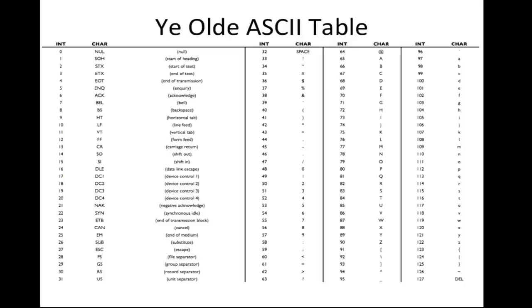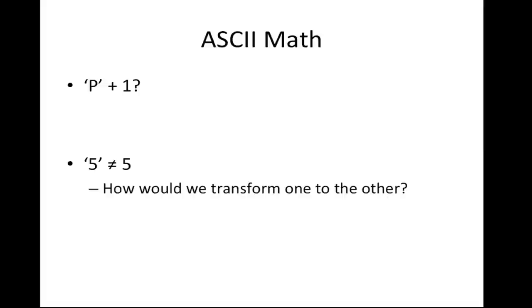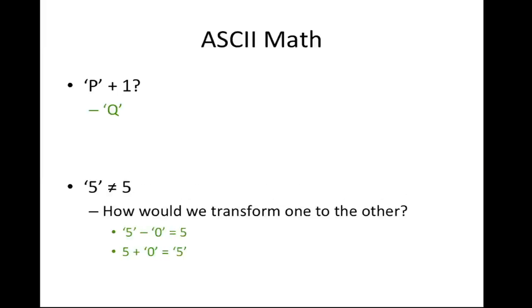This is an ASCII table. We use ASCII to map from characters to numerical values. In the cryptography problem set, we made extensive use of the ASCII table to implement the Caesar and Vigenere ciphers, converting different letters in a string according to the key given by the user. For ASCII math: the character 'p' plus 1 gives 'q'. Remember that the character '5' is not equal to the number 5. To convert between them, subtract the character '0' since there are five places between '0' and '5' in the ASCII table. To go the other way, add the character '0'.